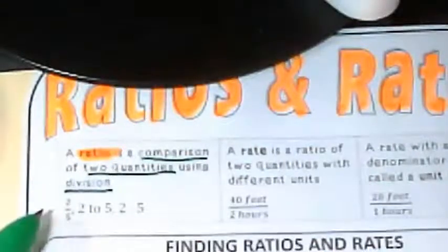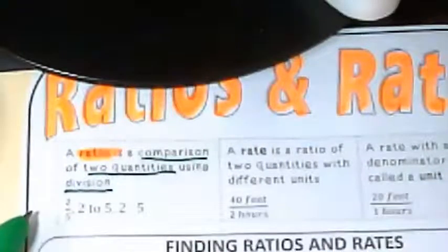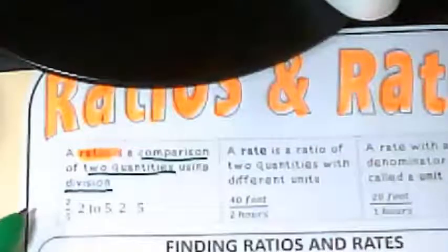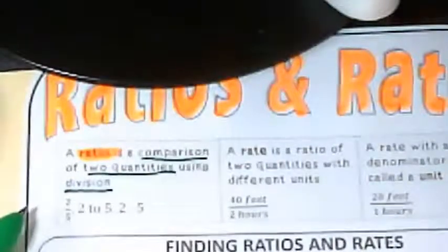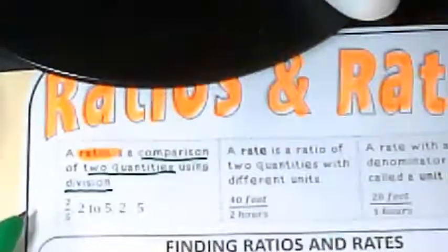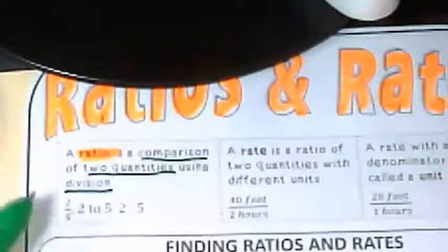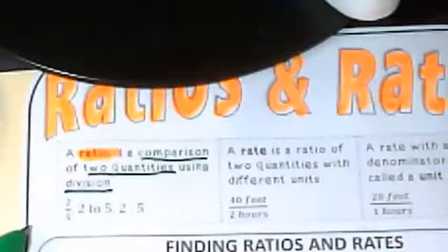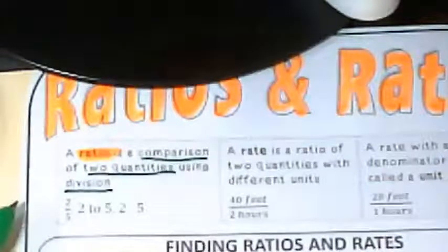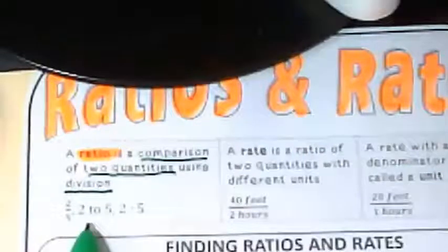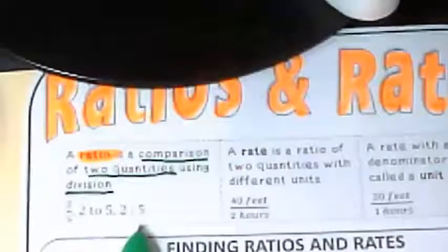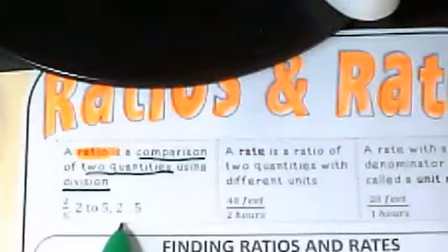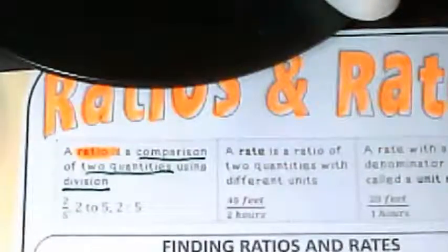Because fractions are comparing part to whole, so like two-fifths of a pizza or two-fifths of the brownie tray or something. In this case, we're talking about two to five of something. It could be two apples to five oranges, two different quantities. It's also written here as two to five with the word 'to,' and it's written here as two to five with a little piece of punctuation, we've got that colon in there.